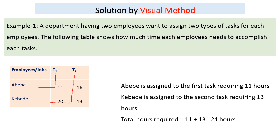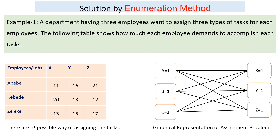If the number of employees or jobs is more than 2, we have to use another method called the enumeration method. Let's solve this example using the enumeration method: a department having three employees wants to assign three types of tasks to each employee. The following table shows how much each employee requires to accomplish each task.